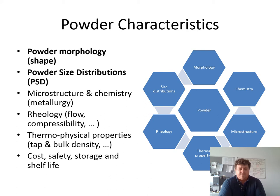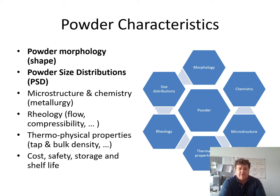The key characteristics of powder include morphology — essentially meaning shape — and powder size distributions, often abbreviated to PSD. We also consider microstructure, chemistry or metallurgy of the alloy, rheology, flow, compressibility and packing, thermophysical properties, physical properties such as tap density, bulk density, and apparent density, as well as cost, safety, storage, and shelf life. In this lecture I'll focus primarily on morphology, size distributions, and flow and density properties.